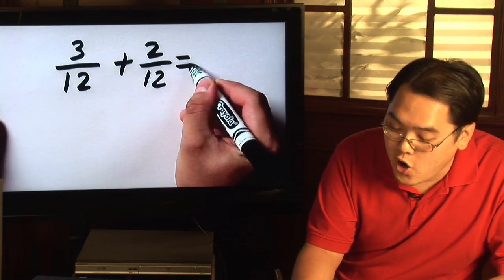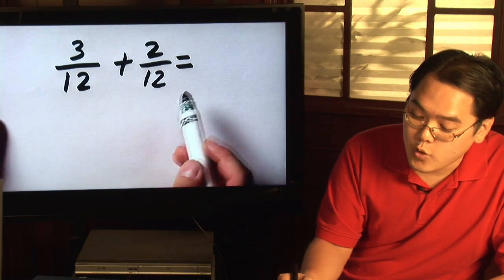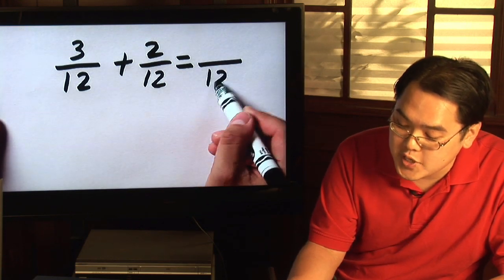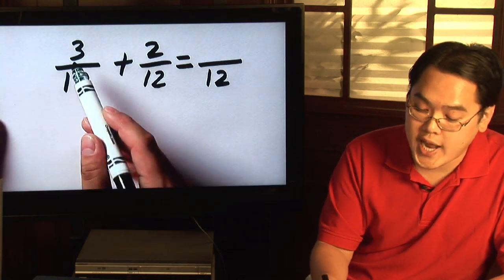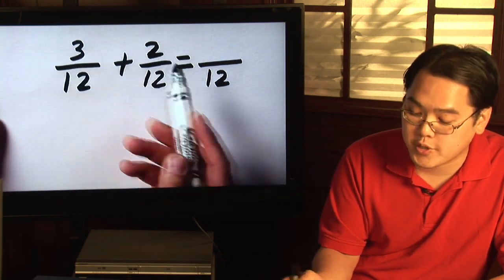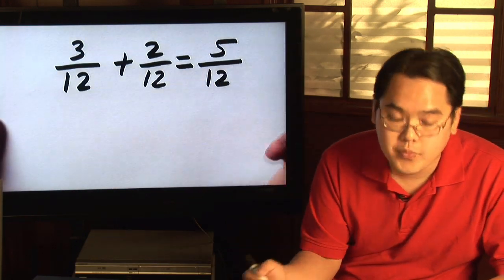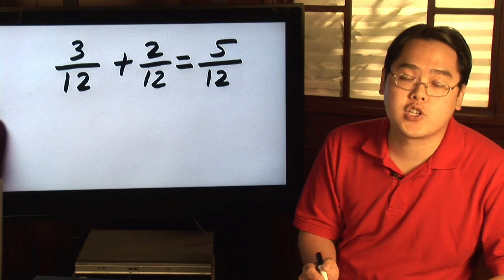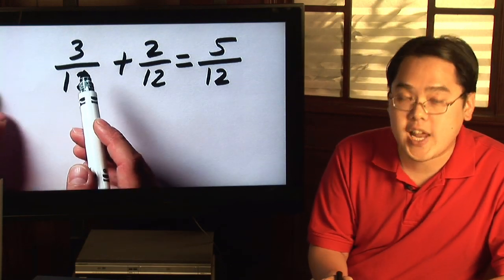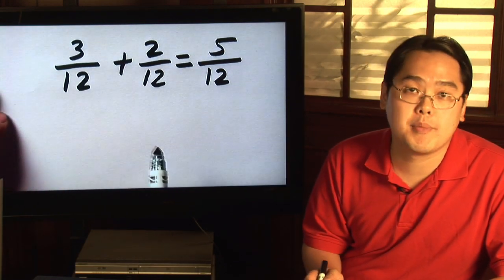If the denominators are indeed the same, then you keep the denominator as is and just add across. Obviously, 3 plus 2 gives you 5/12. So if you're adding or subtracting fractions with the same denominator, you just add across the numerator and keep the denominator the same.